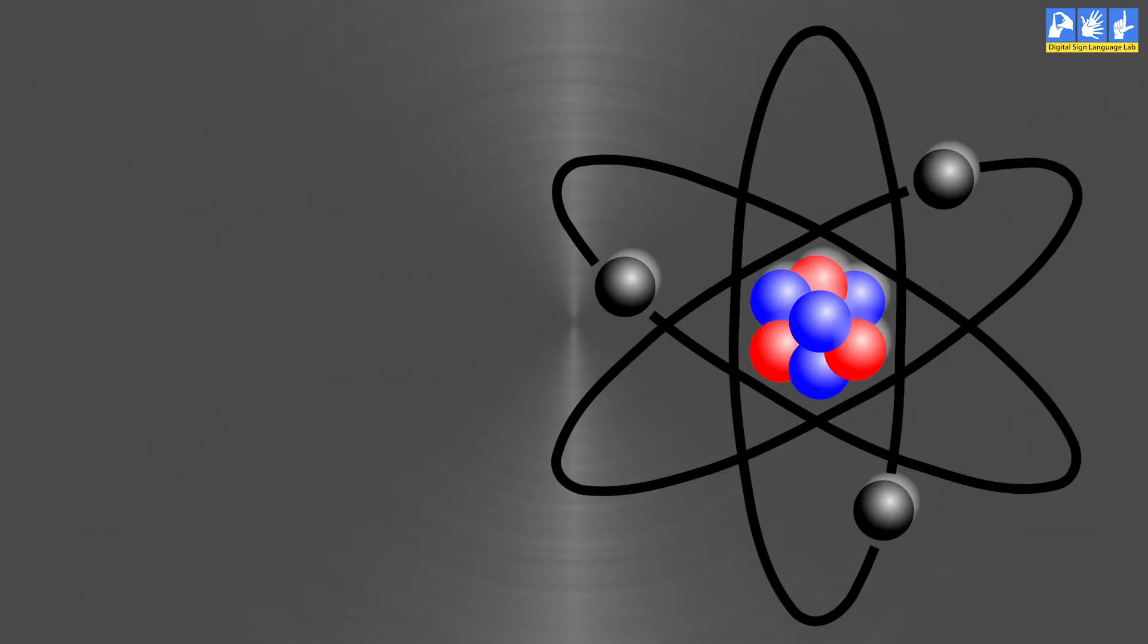Each molecule of coal is made up of number of atoms and these atoms are composed of neutrons. Take a look here. Did you see that? These are called neutrons.